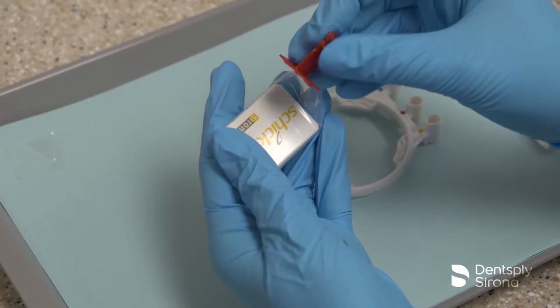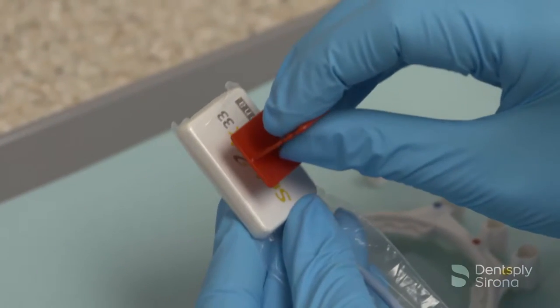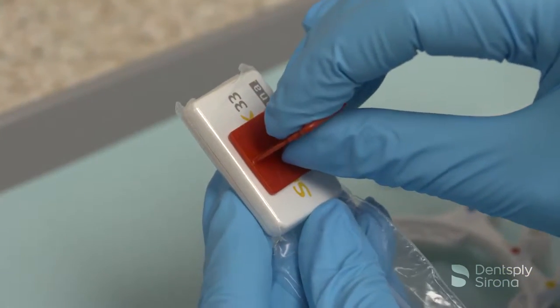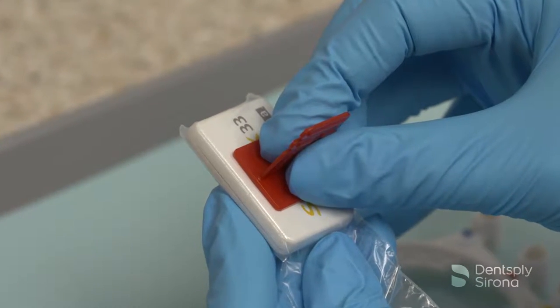Attach the fast tab holder onto the sensor cover in correct orientation for either horizontal or vertical bite wings. Press the holder firmly for five seconds to ensure a permanent bond to the sensor cover.